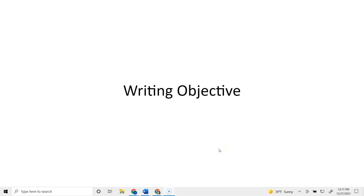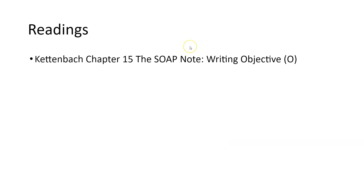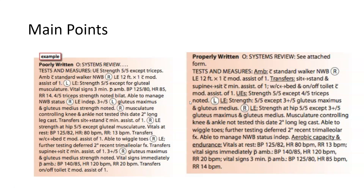The second part of SOAP is the objective section, which corresponds with chapter 15. The main points here involve the same aspects as the systems review and tests and measures components. The more you can use subcategories in a logical, concise flow for your documentation, the easier it will be to read. Different formats for flow and subcategories depend on the style of the clinic you're working at, as well as the different conditions you're documenting.